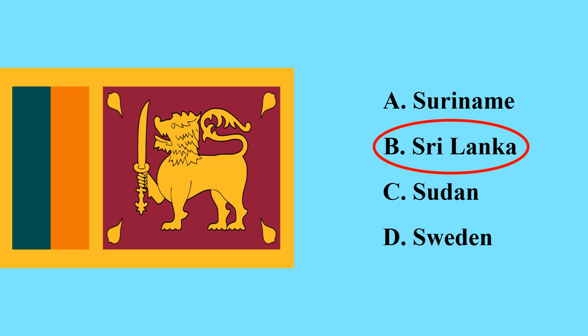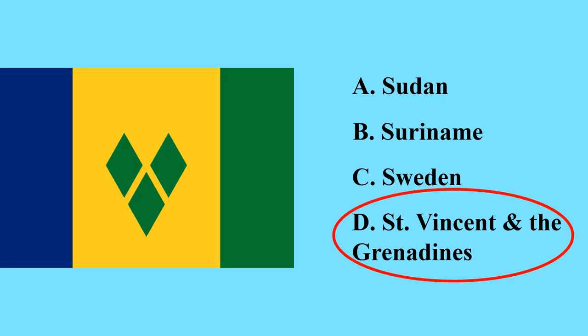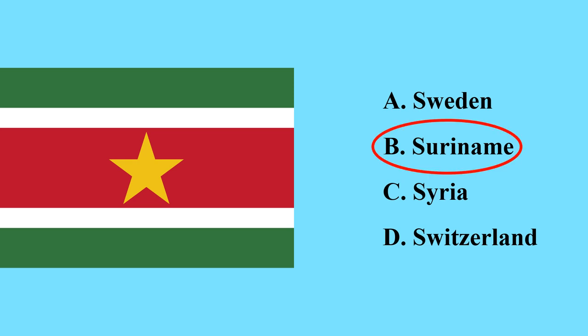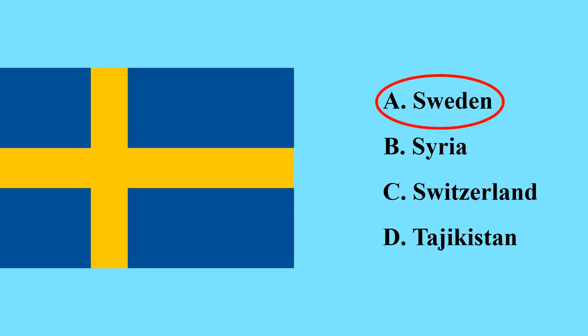This is the flag of Saint Vincent and the Grenadines, a country in North America. This is the flag of Sudan — it is a large country in East Africa. This is the flag of Suriname, the smallest country in South America. This is the flag of Sweden, another Scandinavian country in Northern Europe; its capital city is Stockholm.